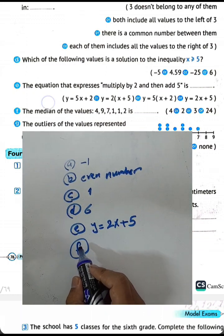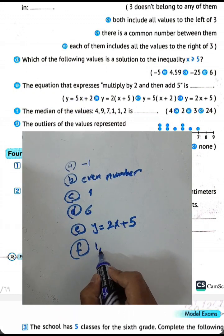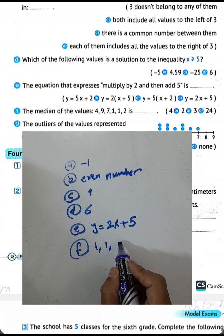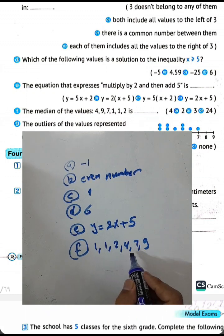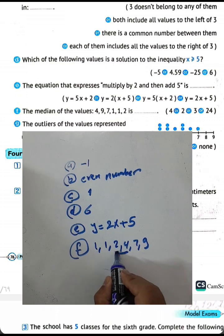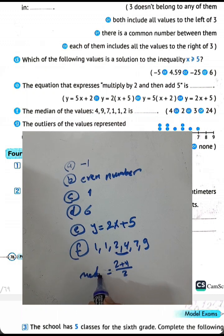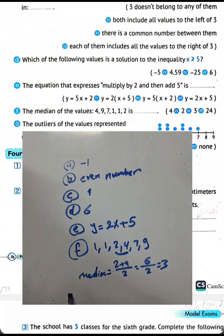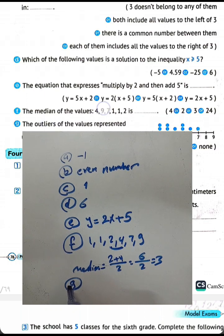Letter F: the median of the values 4, 9, 1, 1, 2. Arranging the values: 1, 1, 2, 4, 7, 9. To find the median, take the middle two values: 2 plus 4 equals 6, divided by 2 equals 3. The median is 3.